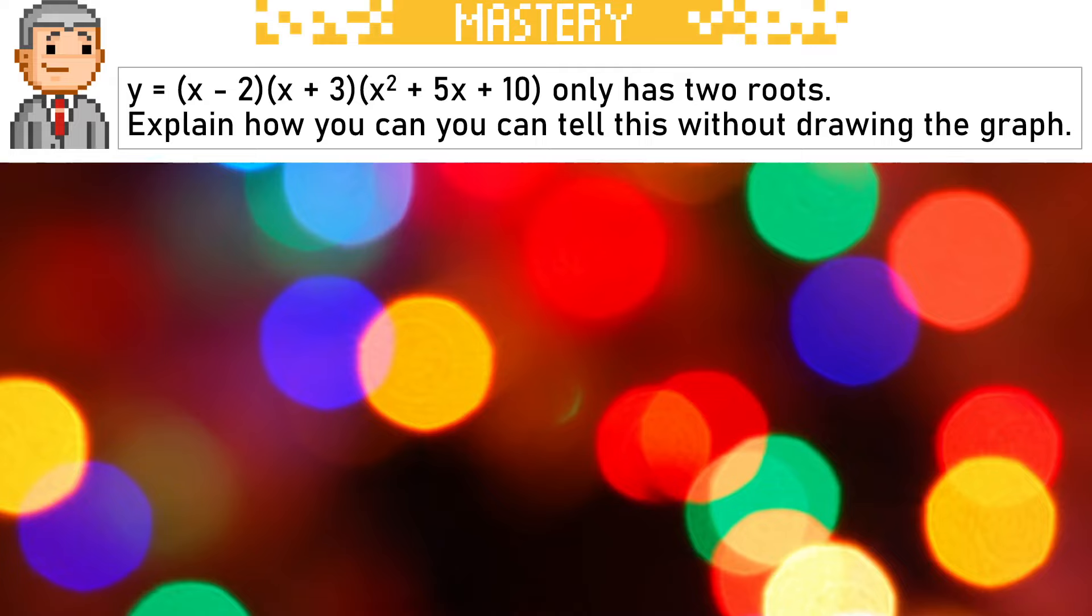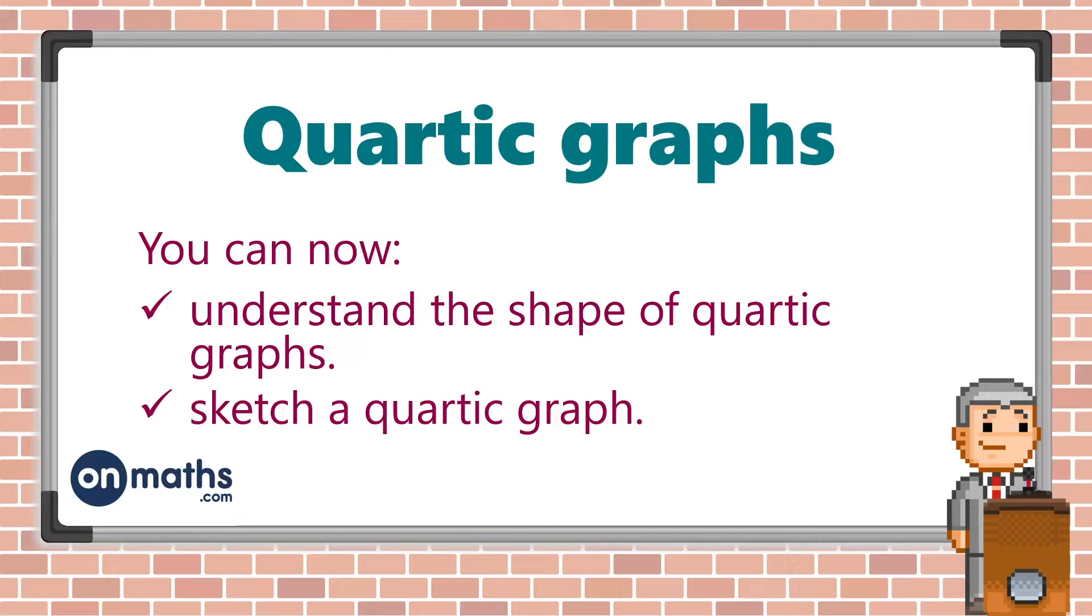Let's finish on this question. We've got y equals x minus 2, x plus 3, x squared plus 5x plus 10 and we're told it only has two roots. Explain how you can tell this without drawing the graph. If you know, write it in the comments below. And you can also come to onmaths.com or click the link in the description where you can access all of our free A-level papers and predictions and you can even save your scores with a free account. This video is part of a larger A-level course that you can follow along with at onmaths.com.